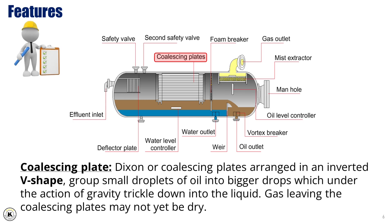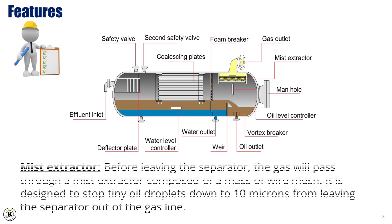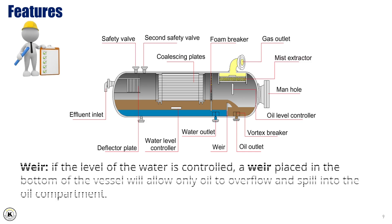Gas leaving the coalescing plates may not yet be dry. A wire mesh foam breaker prevents waves of foam passing along the separator and being carried away with the gas. Before leaving the separator, the gas will pass through a mist extractor composed of a mass of wire mesh, designed to stop tiny oil droplets down to 10 microns from leaving the separator out of the gas line. If the level of the water is controlled, a weir placed in the bottom of the vessel will allow only oil to overflow and spill into the oil compartment.